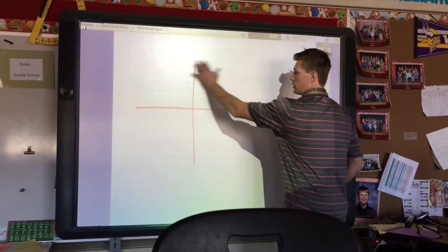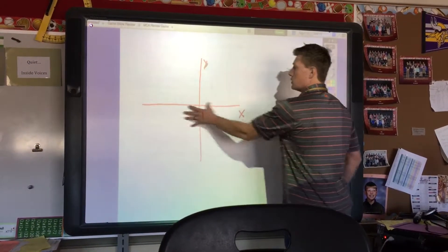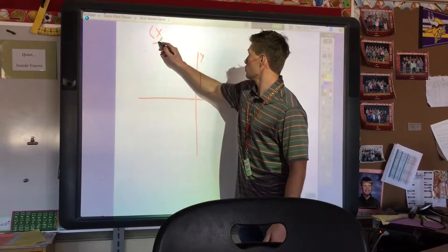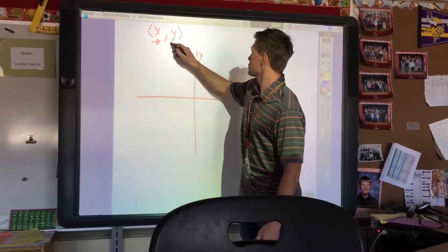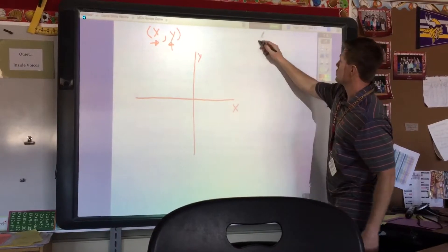So here's our coordinate grid. Here's our x. Here's our y. So if we're plotting points, we're going to be plotting points using x is over, y is up and down. So we're going to be plotting over and up, and we're going to have some constraints.